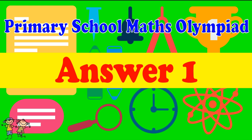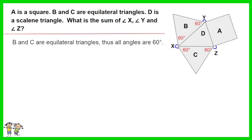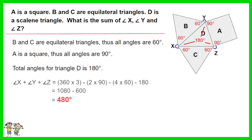Answer for question 1: B and C are equilateral triangles, thus all angles are 60 degrees. A is a square, thus all angles are 90 degrees. Total angle for triangle D is 180 degrees. Thus angle X plus angle Y plus angle Z equals 360 times 3, then minus 2 times 90, then minus 4 times 60, then minus 180. The answer is 480 degrees.